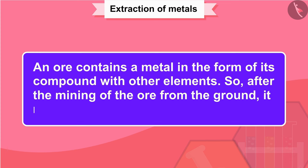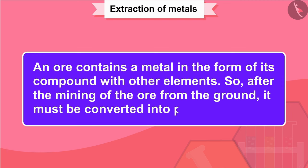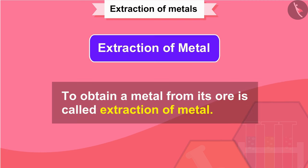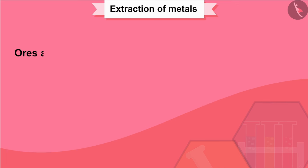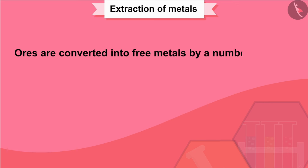After the mining of the ore from the ground, it must be converted into pure metal. To obtain a metal from its ore is called extraction of metal. Ores are converted into free metals by a number of steps which depend on the type of the ore used.